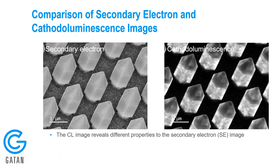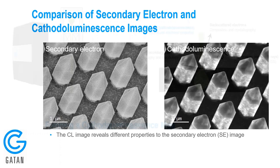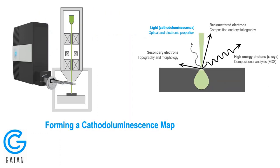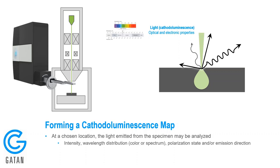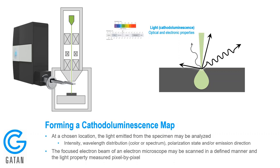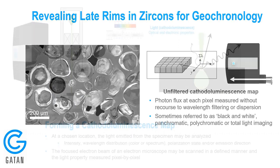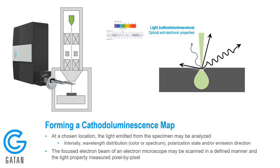As you can see in these two images, the secondary electron image versus the cathodoluminescence image, there's very different information present in either one. The way that we form a cathodoluminescence map is quite basic: as we raster the beam, we acquire the light that comes out of the sample and form two images simultaneously — one the SEM image and the other the CL image.